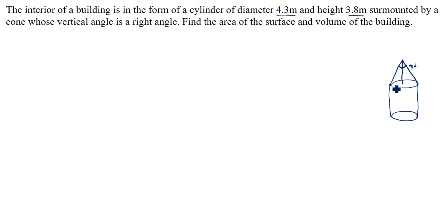We will join. This angle is also 90 degree. What we need to find: area of the surface of the building and volume of the building. First we will name this drawing A, B, C, D, E, this is F.